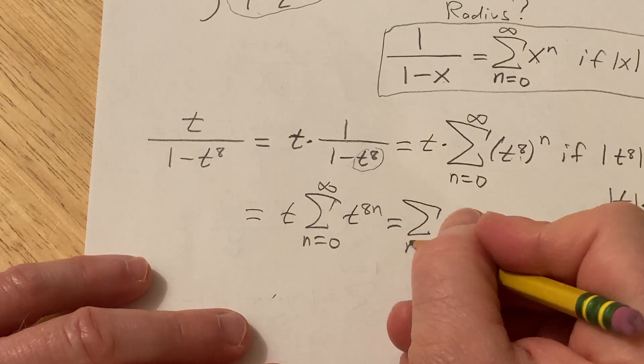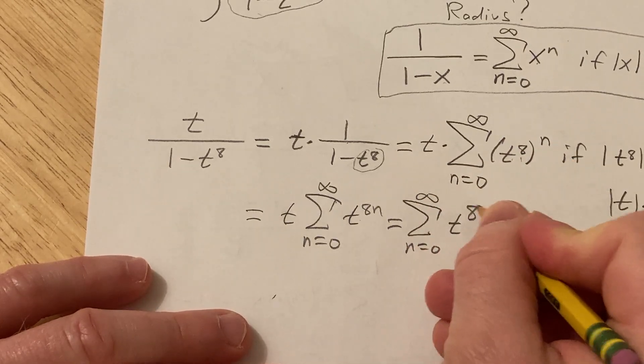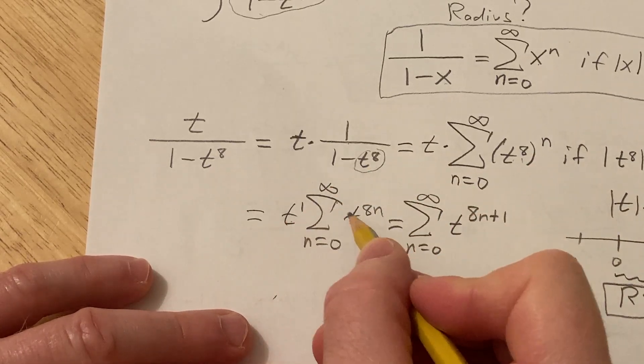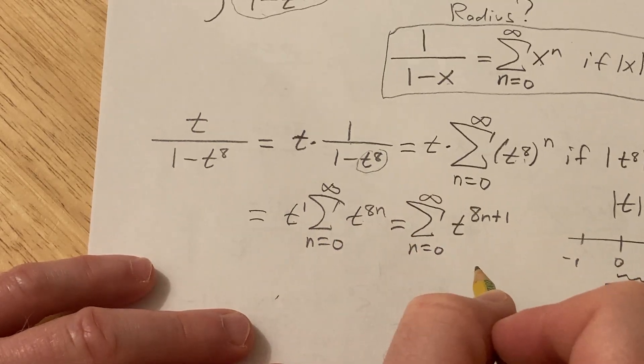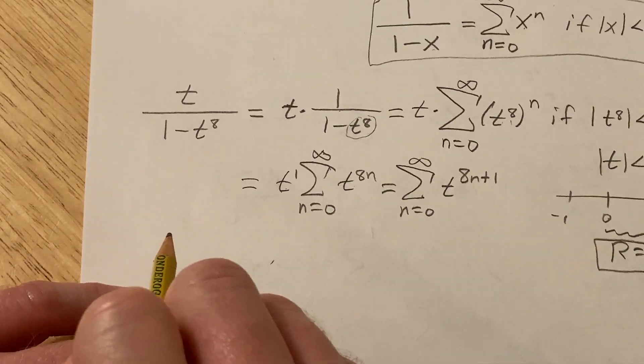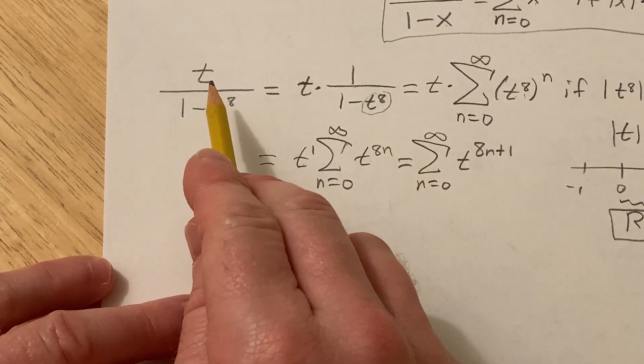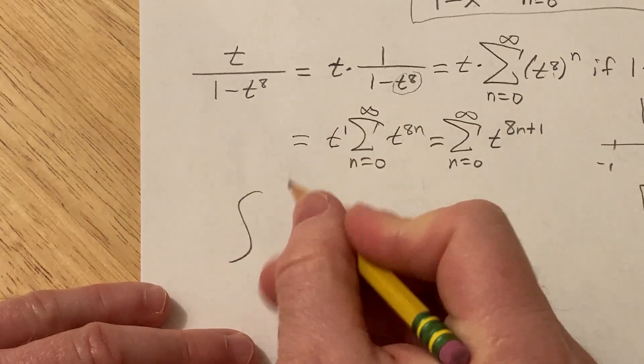And now we can take this t and distribute it through into our sum, so we have n equals zero to infinity, t to the eight n plus one, because there's a one here. When you multiply variables and the bases are the same, you're supposed to add the exponents. So we have that this function is equal to this infinite sum.